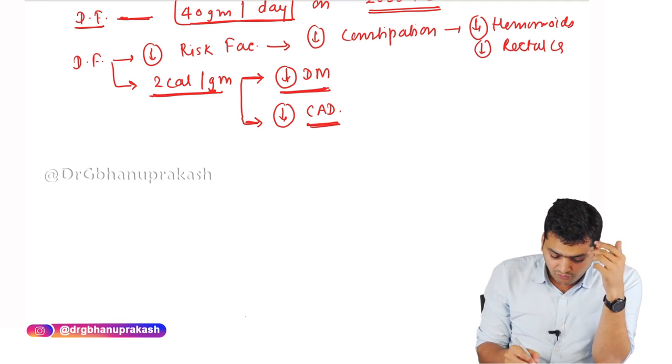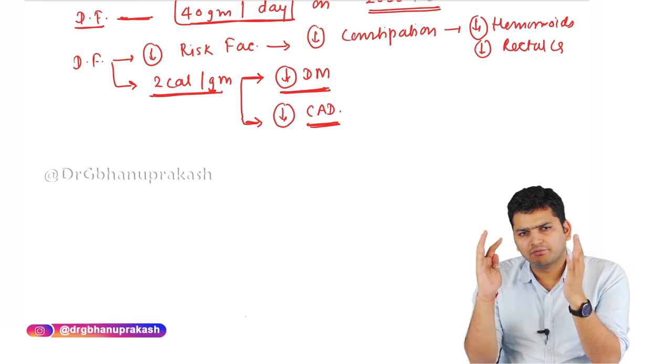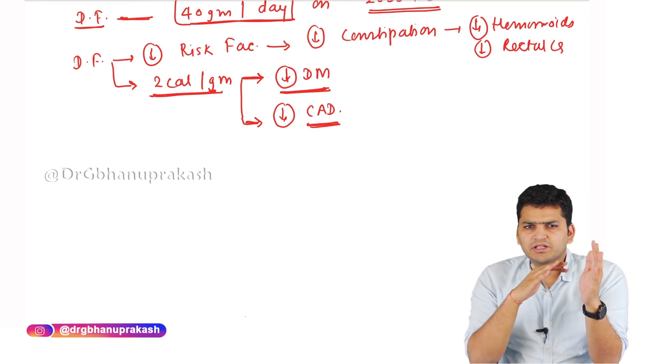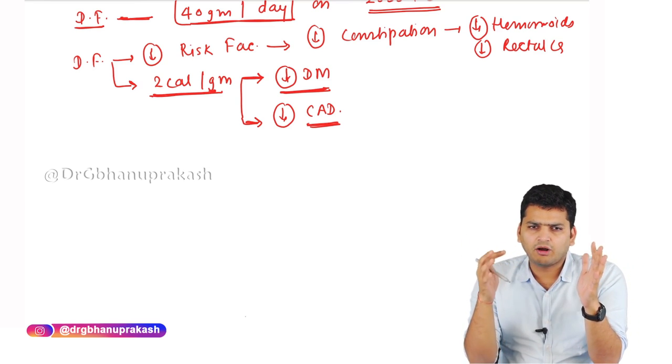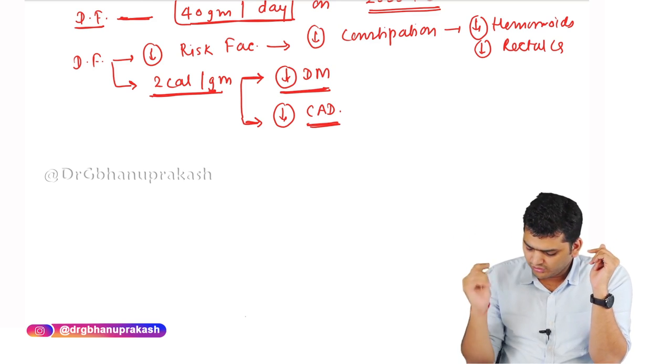Dietary fibers can be soluble or insoluble. The dietary fiber that is neither digested nor fermented is lignin. That's it — thank you.